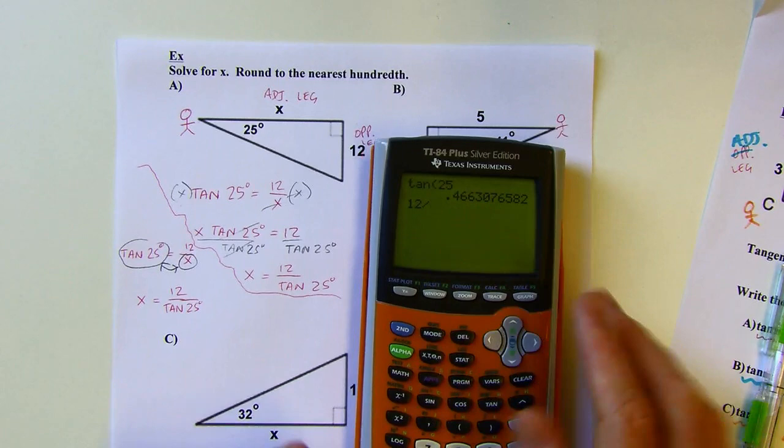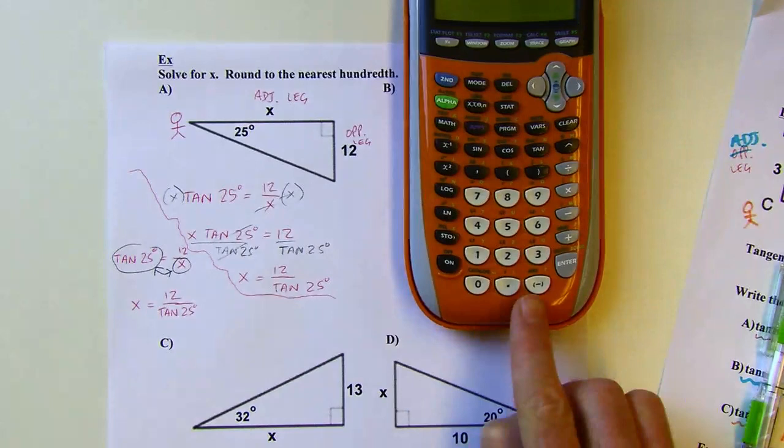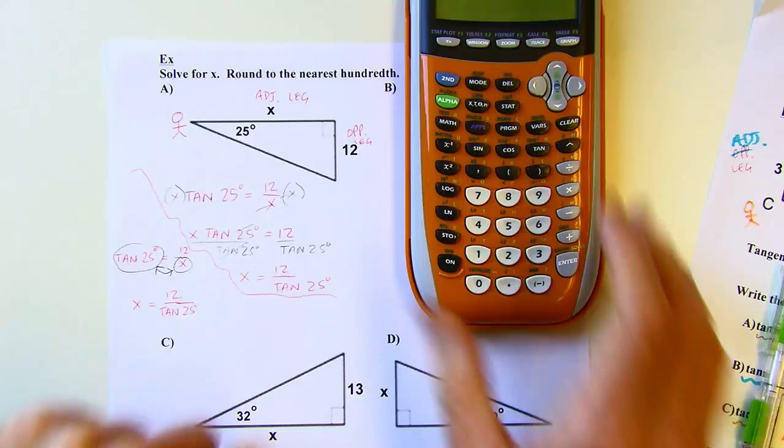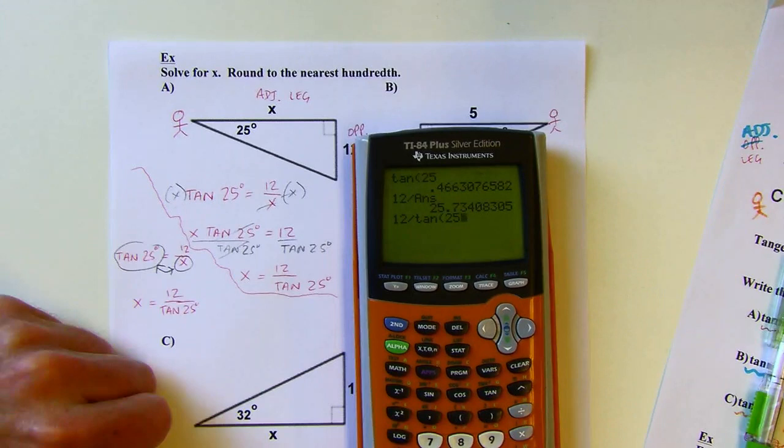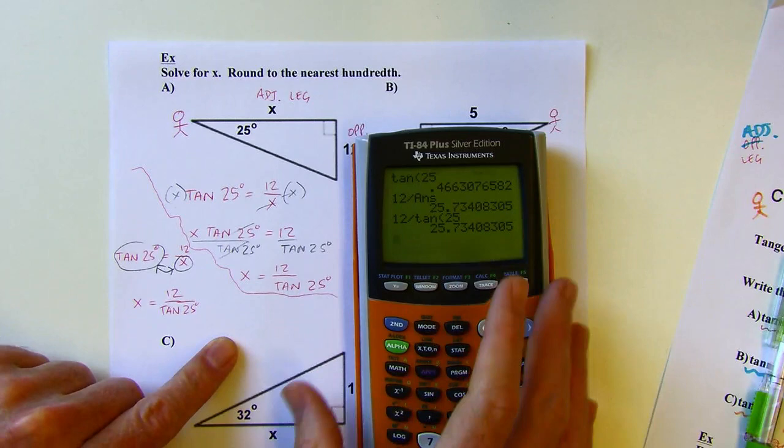Above the negative symbol it says ANS for answer. If I hit second and then negative, it uses my last answer in that position — kind of handy. Depending on your calculator, you may have to do tangent 25 first and then do the division. I'm going to round to the nearest hundredth in this entire chapter every time I have a decimal like this. So x is going to be about 25.73.